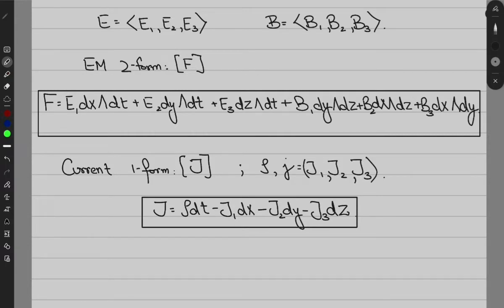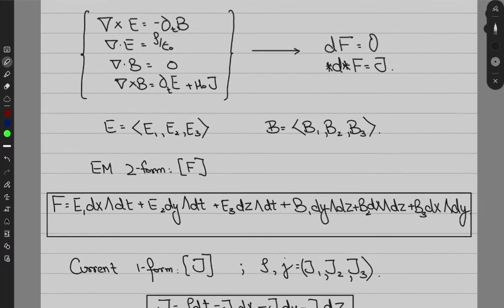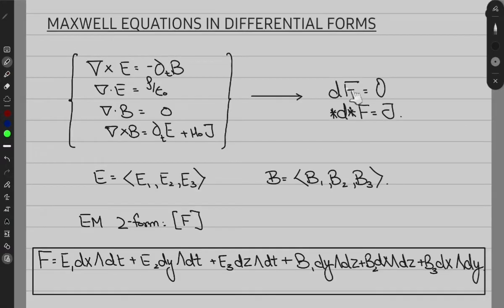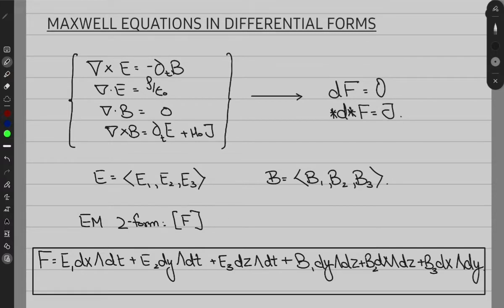Now with that in mind, look at the equations that we want. The first is the exterior derivative of this two-form, which should be equal to zero. The second is the Hodge operator acting on the exterior derivative of the Hodge of the two-form, which should equal the current density J. We'll start with dF = 0.